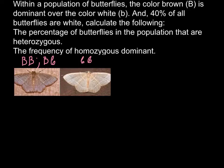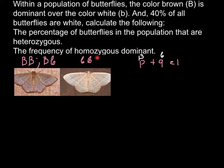This states that p plus q equals to 1. Here p represents the frequency of the dominant allele capital B in our problem, and q represents the frequency of the recessive allele small b. We have only capital B and small b in our problem, giving us three genotypes, and 1 equals to 100% — we have to keep that in mind in all our calculations.